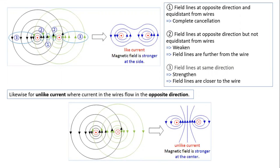Remember two main points: two wires carrying current in the same direction always attract each other, while two wires carrying current in different directions repel each other. The repulsion between the wires is very strong because the magnetic field lines between them are in the same direction, and when field lines are in the same direction, the repulsion is strong.